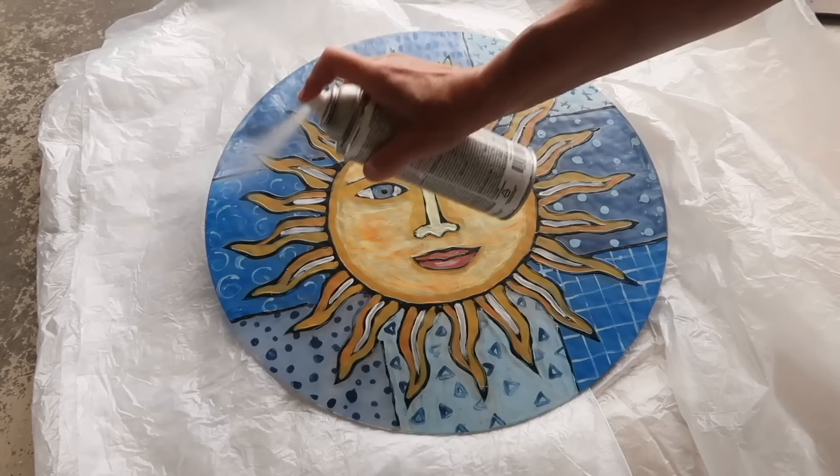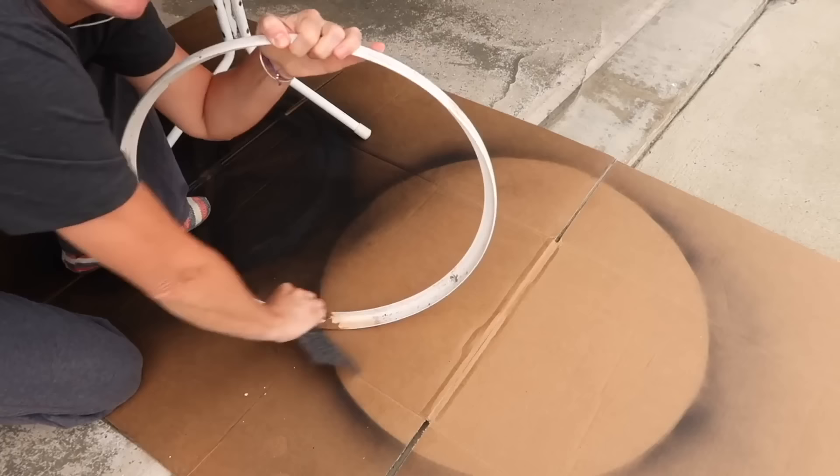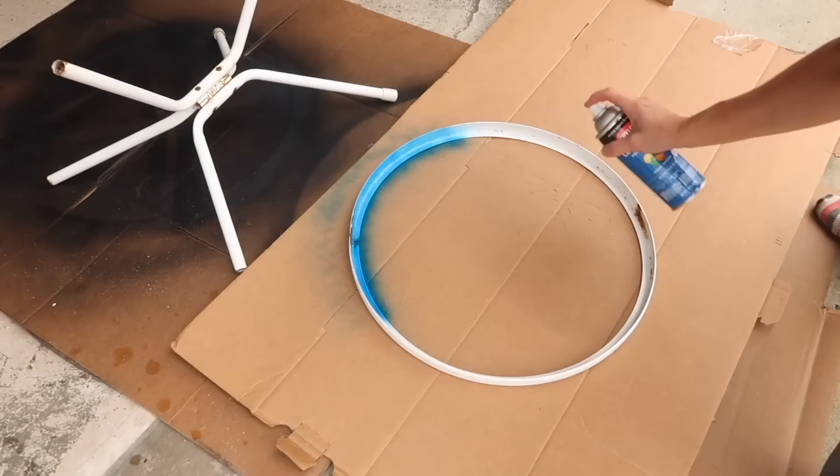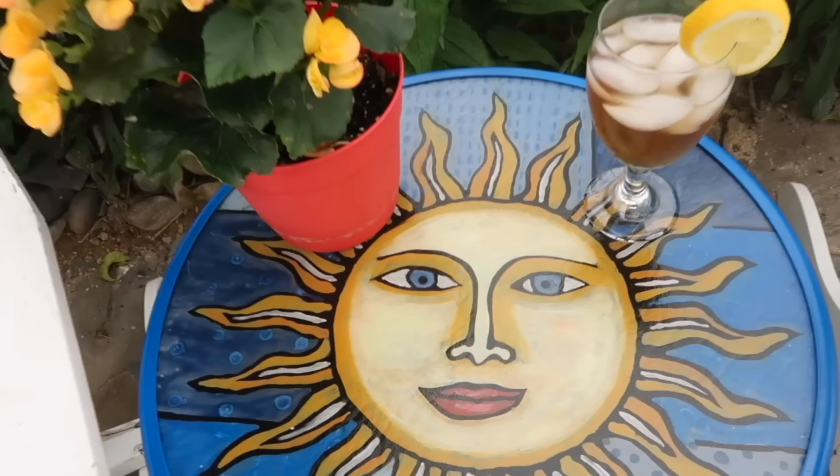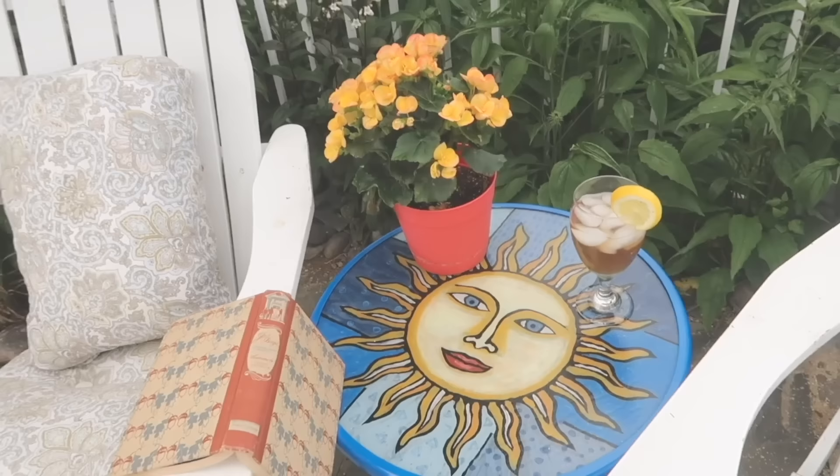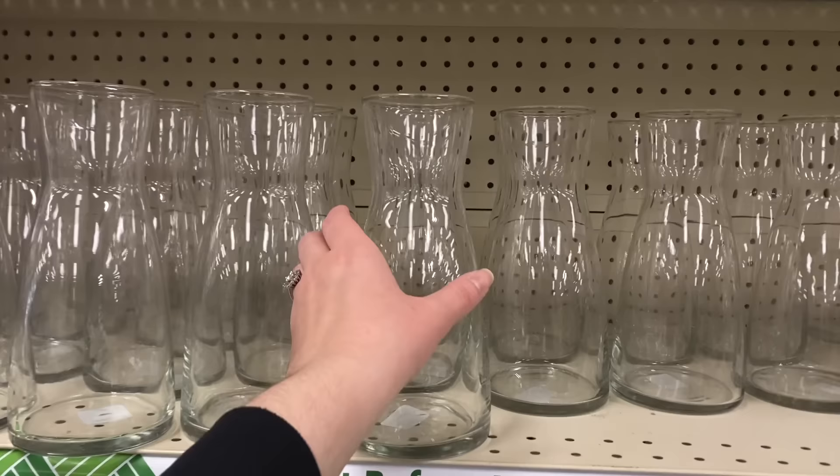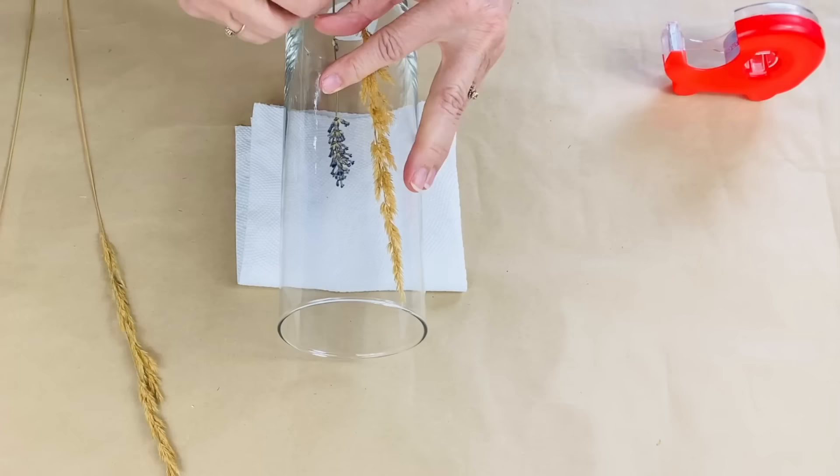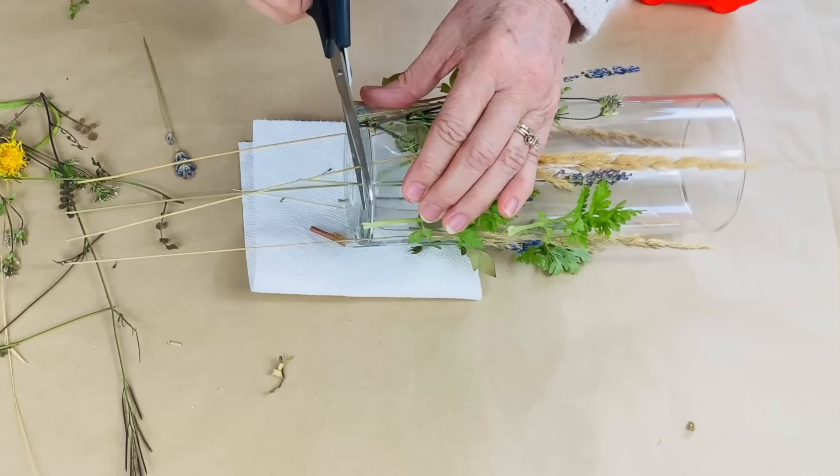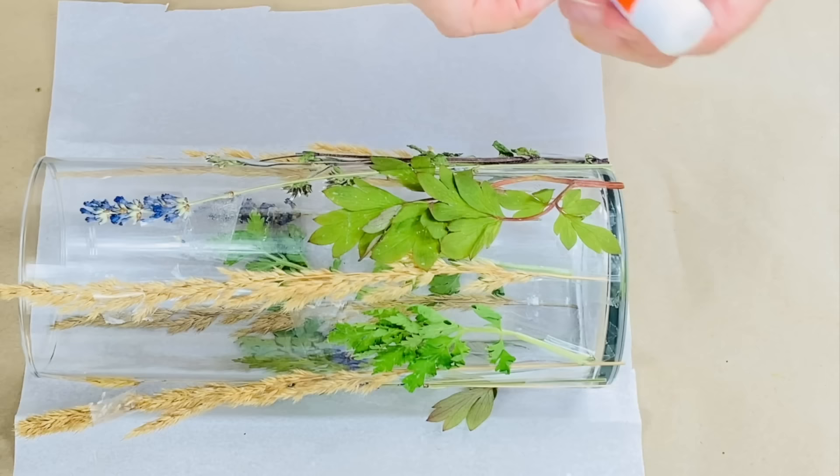I used a medium grit sanding sponge. I painted the metal bright blue. The table looks great in our outside space and friends can't believe that I painted it. I'm going to stick these grasses and weeds to this glass. Cut off these extra bits on the bottom.